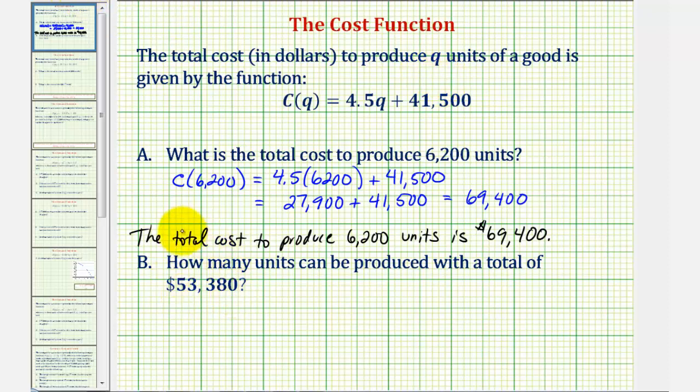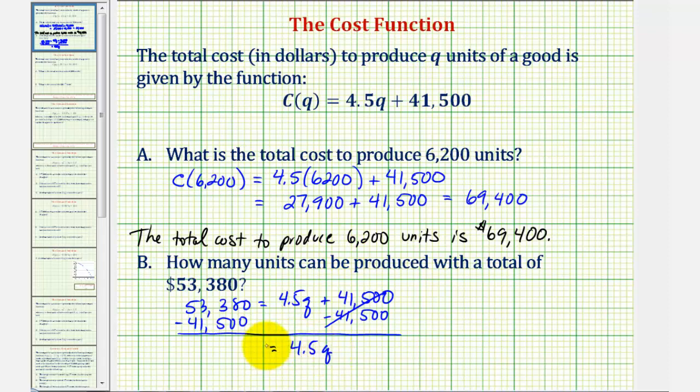So if this is C(q), we want to solve the equation 53,380 equals 4.5q plus 41,500. To solve for q, we would first subtract 41,500 on both sides. So we'd have 4.5q equals 53,380 minus 41,500, which is equal to 11,880.